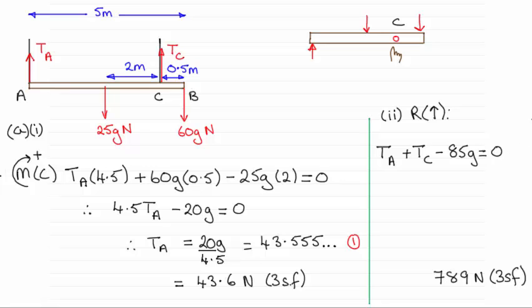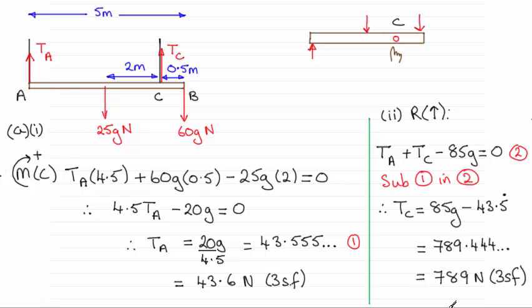Now I'm going to call this equation 2, and all I've got to do now is substitute the result for the tension in A, which I've called 1, substitute that value into here, rearrange to get the tension in C. Well, I've done that for you. You can see that we end up with that 789 newtons. So I hope that's given you some idea then on how to handle that kind of question.